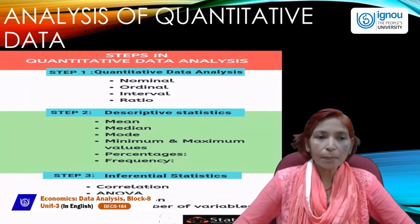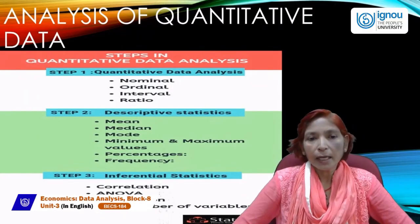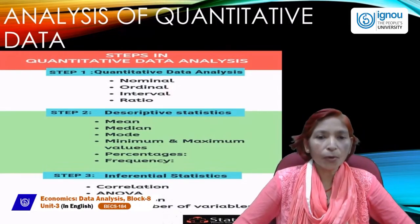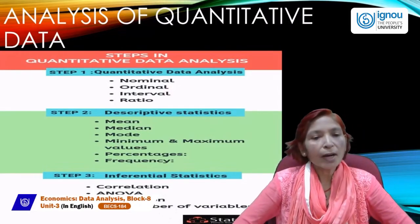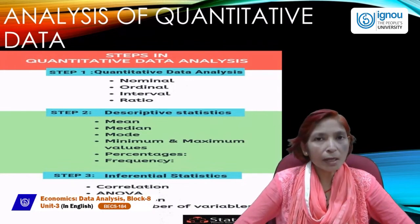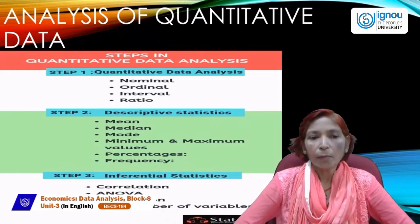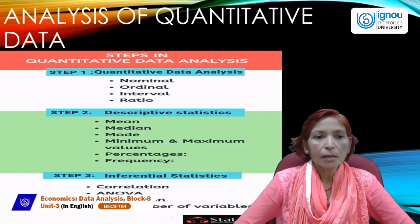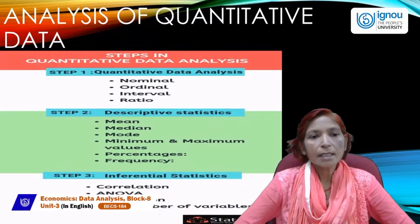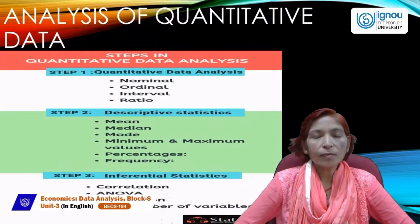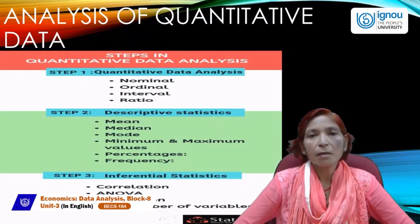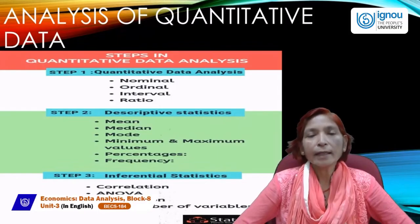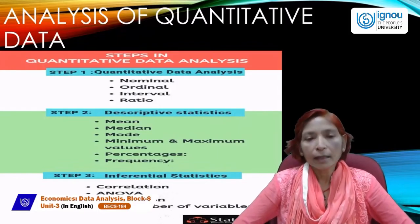The first step is that quantitative data analysis can be measured with the help of four measures: number one is nominal, number two is ordinal, number three is interval, and number four is ratio. These four — nominal, ordinal, interval, and ratio — are the four measuring methods of quantitative data analysis.